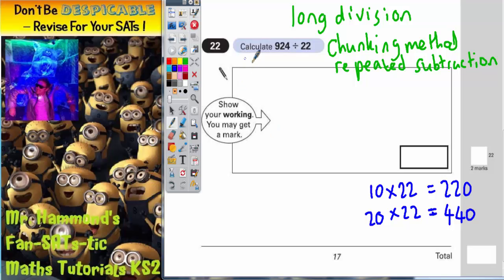So let's have a go at this. So first thing we need to do is set it up. So we've got 924. And how many 22s go into that? Well, I could take off a chunk of 10 22s. But that would take me a long time. So if I can take off a bigger number, a bigger chunk, that's going to be easier for me. So I'm going to take off 20 lots of 22.